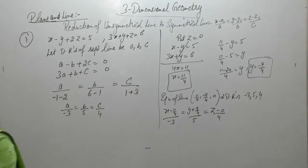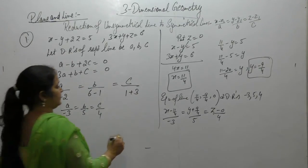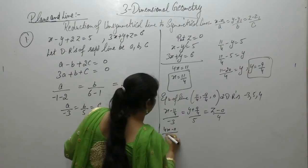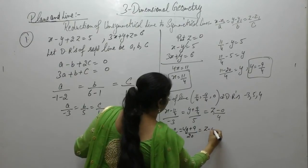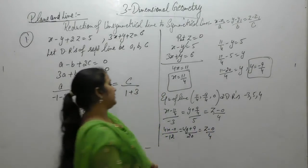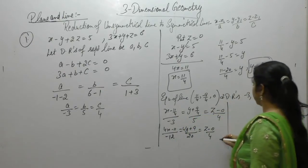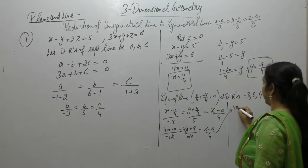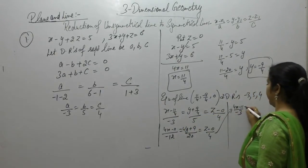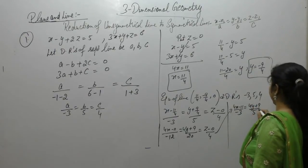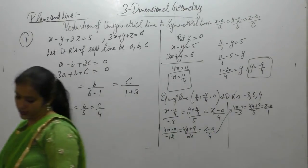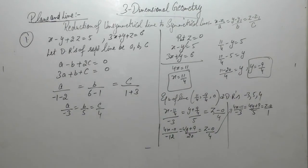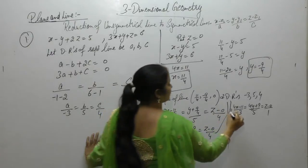Take the LCM and solve this. 4x minus 11 by 4, 4x minus 11 upon minus 12, 4y plus 9 upon 20, z minus 0 by 4. If 4 will get cancelled from here, so we get 4x minus 11 upon minus 3, 4y plus 9 upon 5, z minus 0 upon 1. So, this is the required equation of the line.